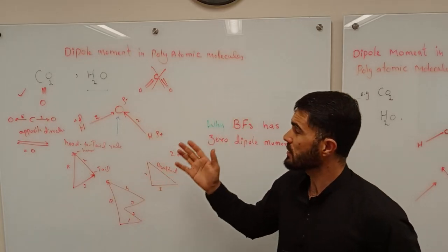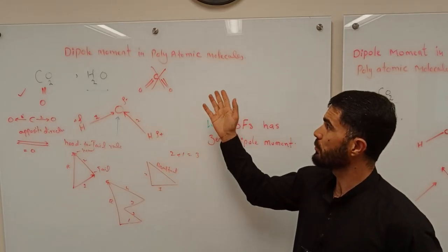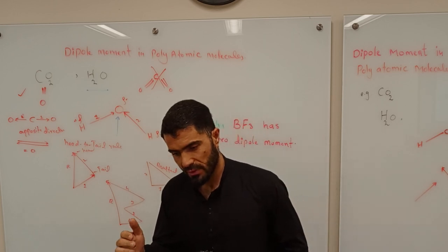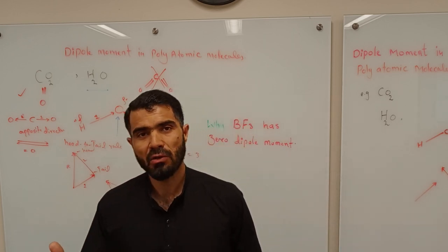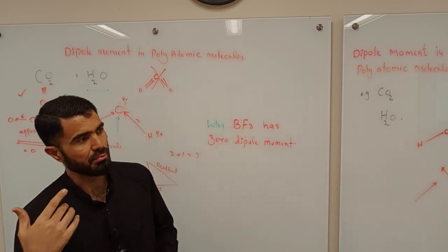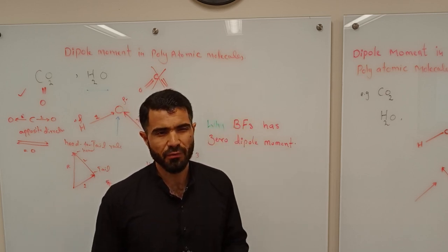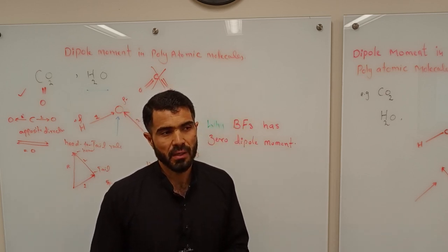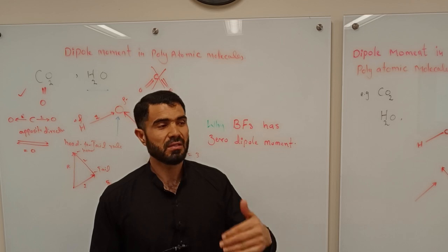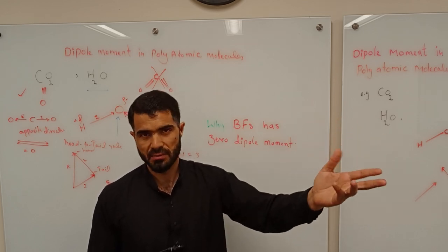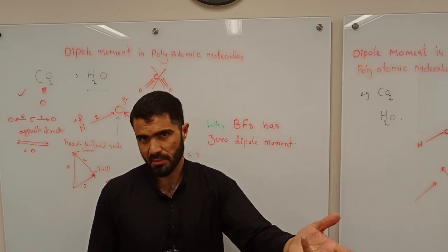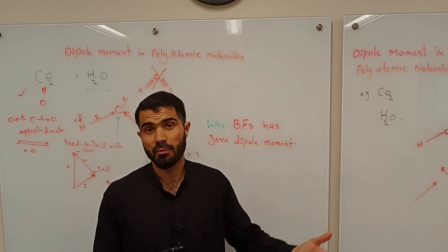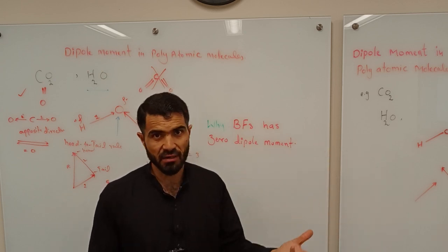Welcome back once again. Today we will discuss dipole moments in polyatomic molecules. If there is a molecule where the number of atoms is more than two — three atoms, four atoms — those are polyatomic molecules. So how will we determine the dipole moment of that kind of molecule?